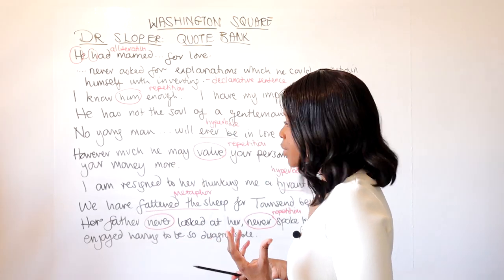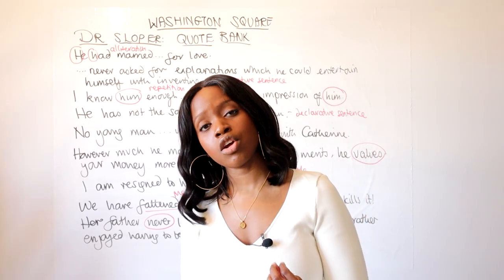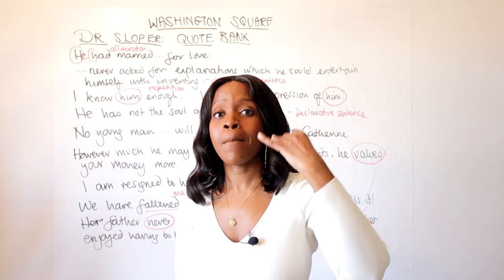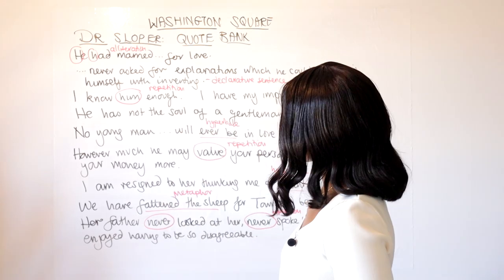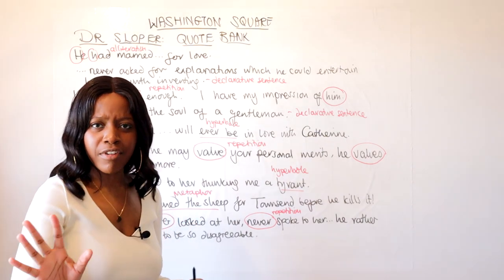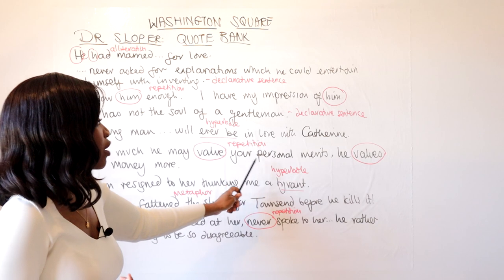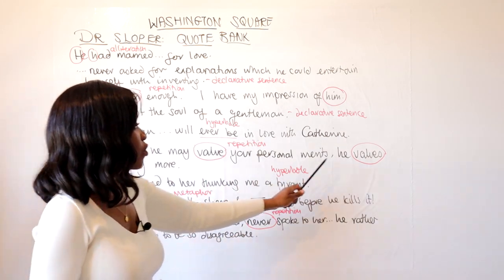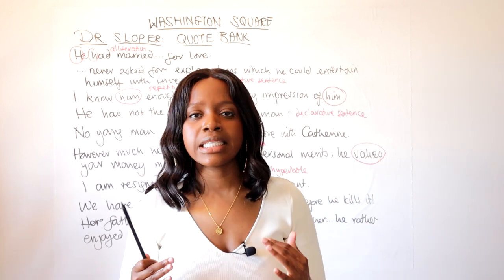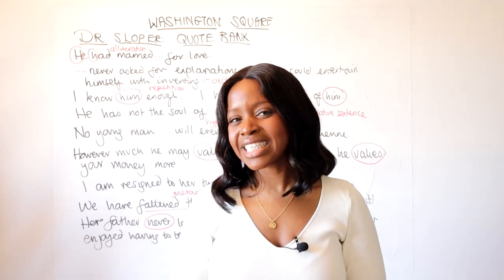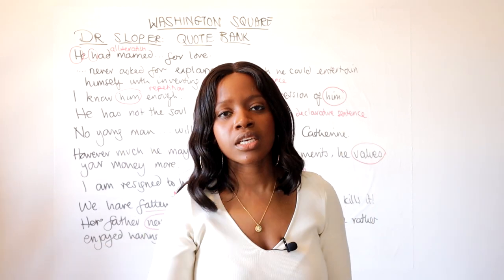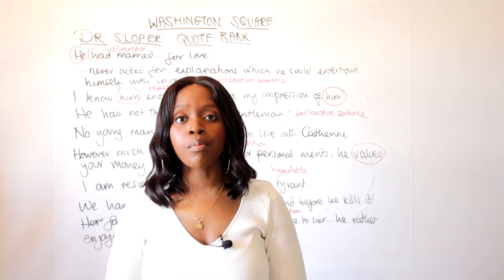The next quotation showing Dr. Sloper can see through Maurice's mercenary goals: 'however much he may value your personal merits, he values your money more.' He's telling Katherine that while Maurice might value her as a person, her money is more important to him. The repetition of the word 'value,' tied to monetary interest, illustrates that Dr. Sloper clearly sees through Maurice's scheming — wanting to marry Katherine to gain both inheritances.